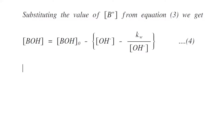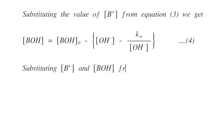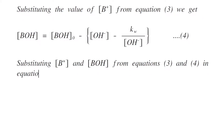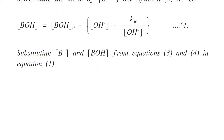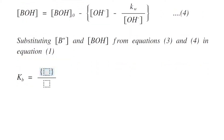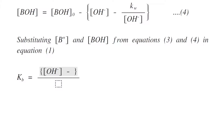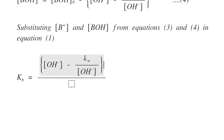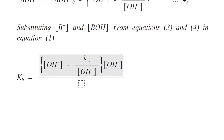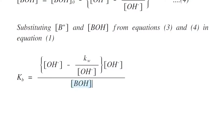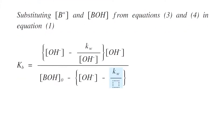Now let's substitute the values of [B⁺] and [BOH] from equations three and four into equation one. So Kb becomes ([OH⁻] minus Kw/[OH⁻]) multiplied by [OH⁻], divided by [BOH]₀ minus ([OH⁻] minus Kw/[OH⁻]).